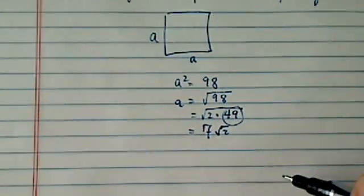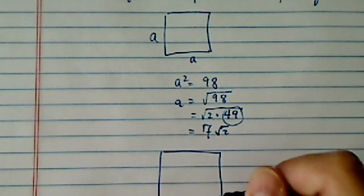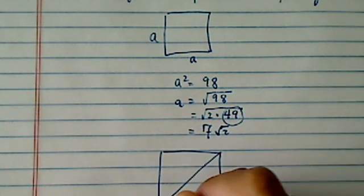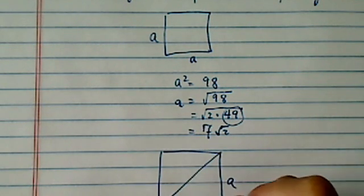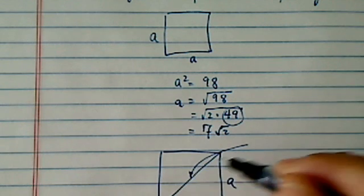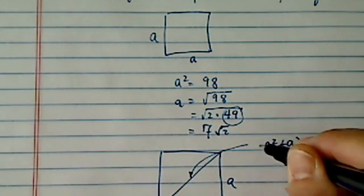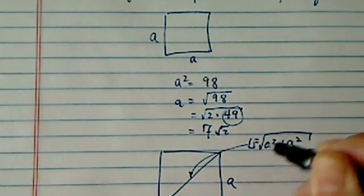Okay, so now we have the sides of the square here. If this is A and this is A, then this one, using Pythagorean theorem, will have A squared plus A squared is equal to L.